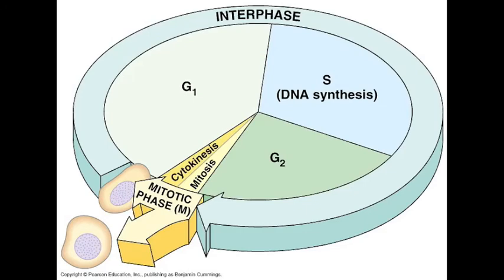The cell cycle is the life of a cell from the time it is first formed from a dividing parent cell until its own division into two cells. The cell cycle has three main phases composed of interphase, mitosis, and cytokinesis.